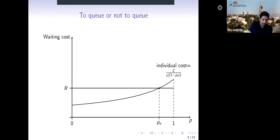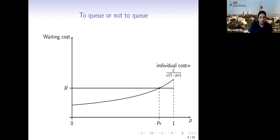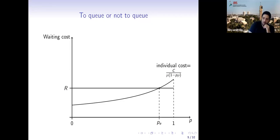This leads to a very problematic situation: everyone is indifferent between joining and not joining, so the total social welfare is zero. All the reward customers receive is exactly offset by waiting costs. This is a kind of tragedy of the commons.